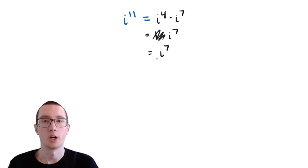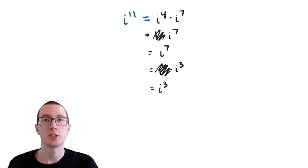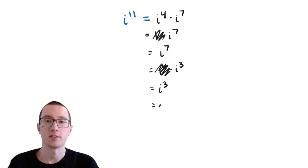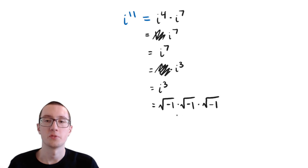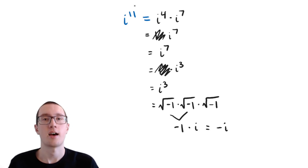So what is i to the seventh? We can do the same thing — split it into i to the fourth times i to the third. Again, i to the fourth is 1, so it does nothing and we can cross it out. Now we just have i to the third. That's the square root of negative 1 times itself times itself — two square roots of negative 1 make negative 1, and negative 1 times i is negative i. So i to the 11th equals negative i. You can keep taking out i to the fourths for any large exponent.